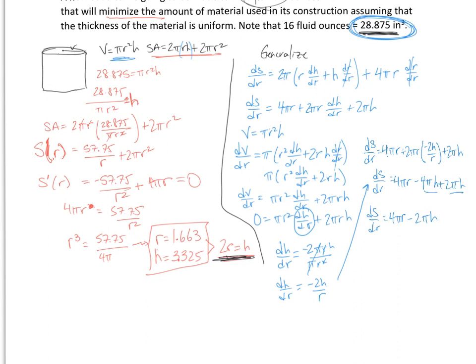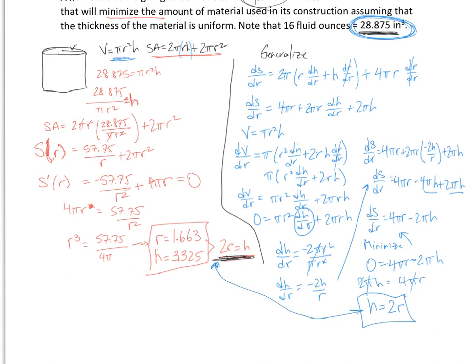To find a minimum, I want to minimize my surface area, so I need ds/dr = 0. Setting it equal to 0: 0 = 4πr − 2πh. Solving: 2πh = 4πr. The π's reduce, and h = 2r. And notice, that's what we found earlier — it all comes together. We have this pattern.